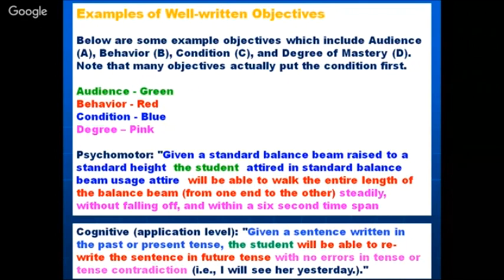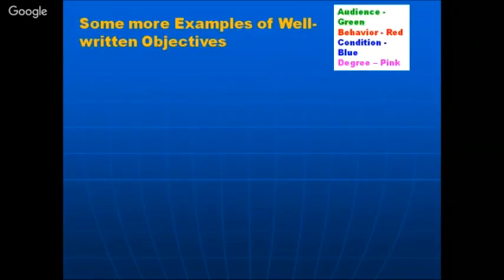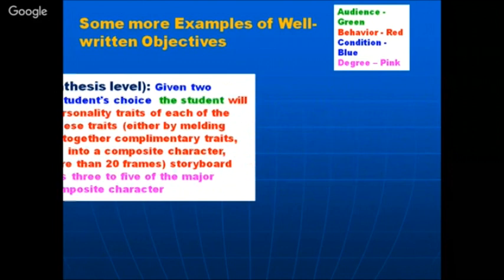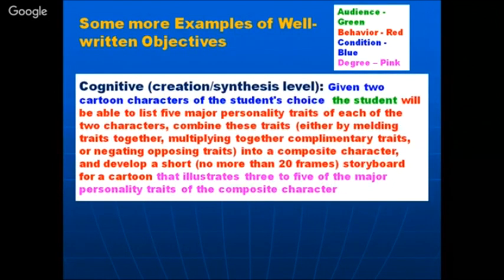Some more examples on well-written objectives — the same color coding applies. When testing students at the level of creation in cognitive ability, for example: given two cartoon characters of a student's choice, the student will compose a character and develop a short no-more-than-20-frames storyboard that illustrates three to five of the major personality traits of a composite character.